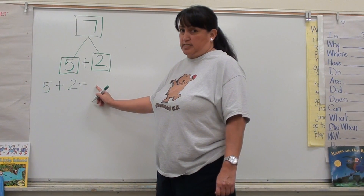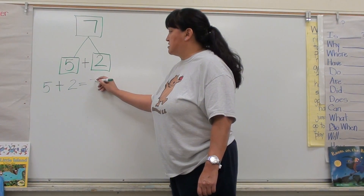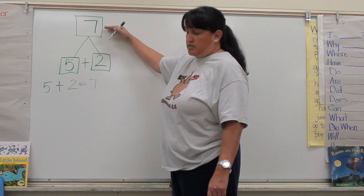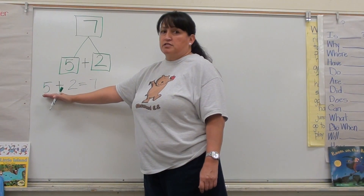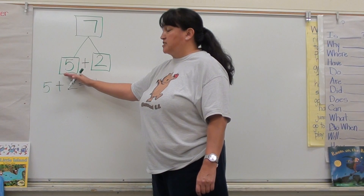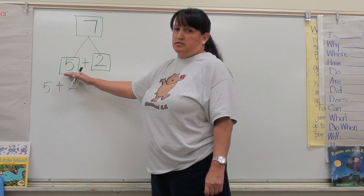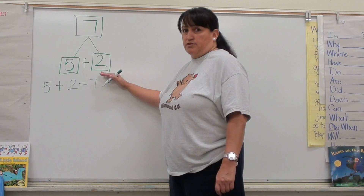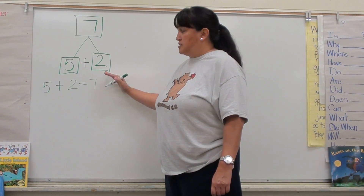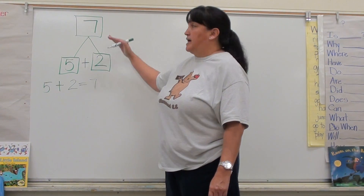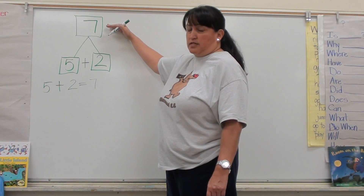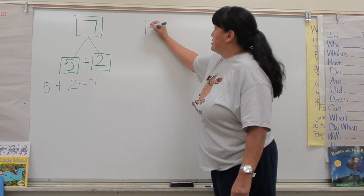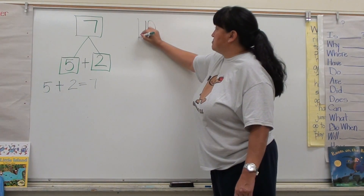The equal sign is going to tell me right after what the sum of five and two is. I'm going to write seven, because that's my whole number. So I have my part five, which matches the part on the number bond, my other part two — the other part of the number bond — which equals seven, and that's my whole number.